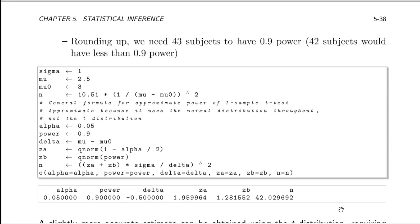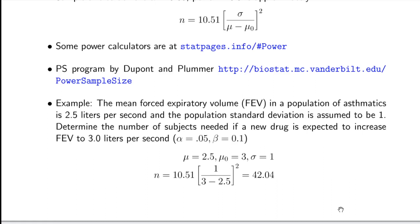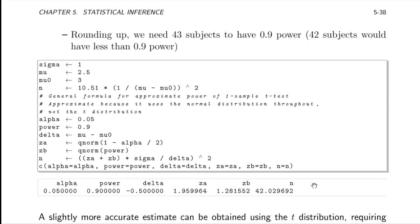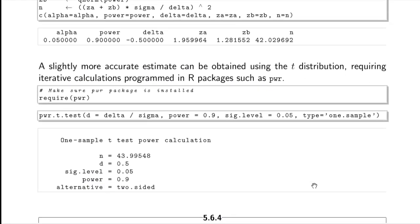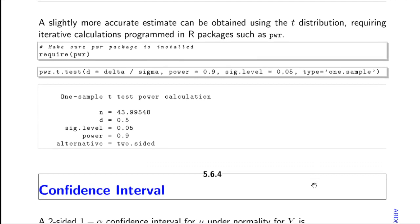Going through the example, with a population standard deviation of 1 and a difference to detect between 2.5 and 3, a sample size of 42 would achieve 0.9 power — meaning type II error beta of 0.1 with type I error of 0.05. Using the pwr package in R gives the exact power and sample size calculation; the result is just slightly different from the normal approximation.